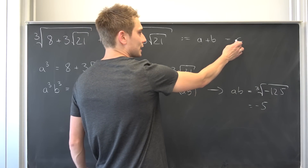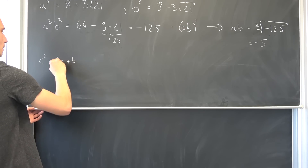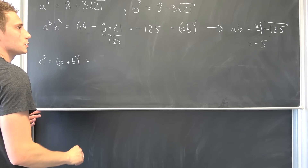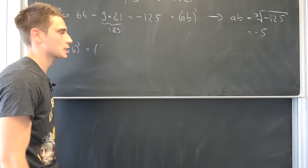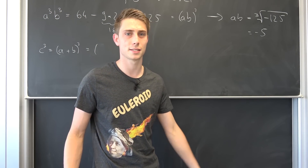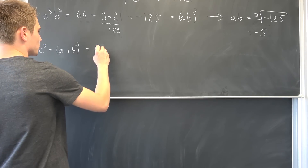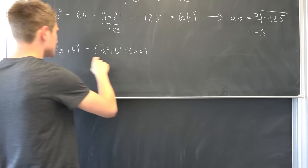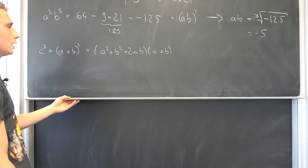Now we would like to take a look at c to the third power. That's going to give us (a plus b) to the third power. Since I never have Pascal's triangle in my head, I'm just going to do it from scratch in this improvised session. We have a plus b squared times a plus b, which expands as a squared plus b squared plus 2ab, all times a plus b.